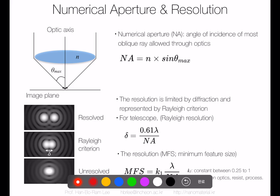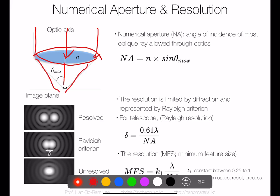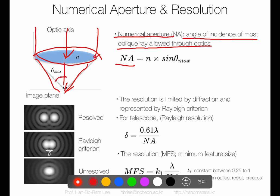Lithography has limitations related to the wavelength of the light source. We use light to change the photoresist. Light comes in through a lens and focuses on the substrate. The numerical aperture is defined by n times sine-theta, where theta is the angle of incidence of the most oblique ray allowed by the optics, and n is the index of refraction. If numerical aperture increases, we can focus on a very narrow area.